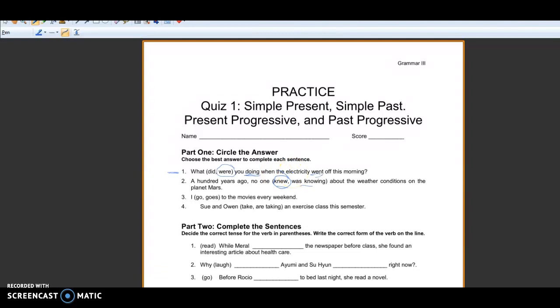Number three, I go or goes to the movies every weekend. Both of these verbs are in the simple present but we see that since the subject is I, we need to use go because S on the end of a verb only goes for he, she, or it.